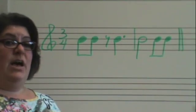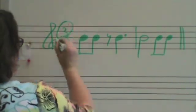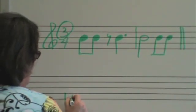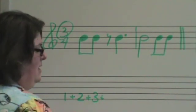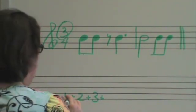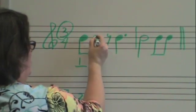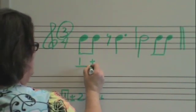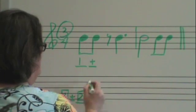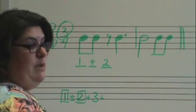We now have a new time signature, which will affect the counts we write underneath. There are now three beats in a measure, so we'll write one and, two and, three and in the correct places. Eighth notes get half of a count, so they get one piece. Another eighth note gets the next piece. That's an eighth rest — it gets one piece. Dotted quarter gets one and a half counts, so it gets three pieces.